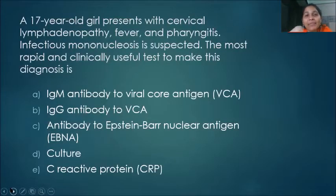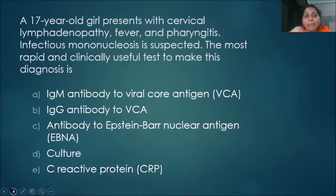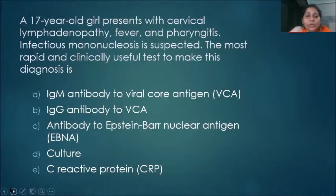A 17-year-old girl presents with cervical lymphadenopathy, fever, and pharyngitis. Infectious mononucleosis is suspected. The most rapid and clinically useful test to make this diagnosis is: IgM antibody to viral core antigen, IgG to viral core antigen, antibody to Epstein-Barr nuclear antigen, culture, or C-reactive protein.